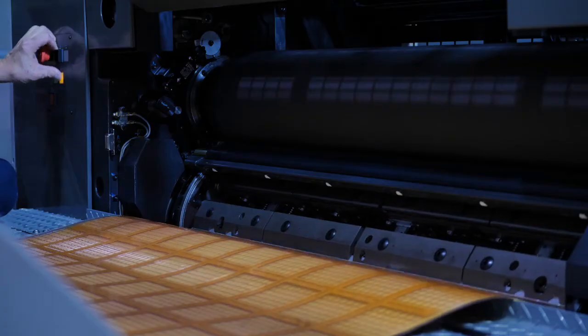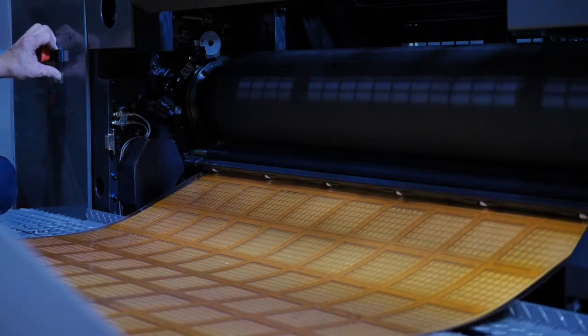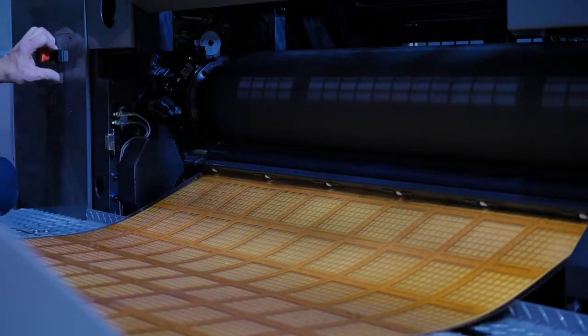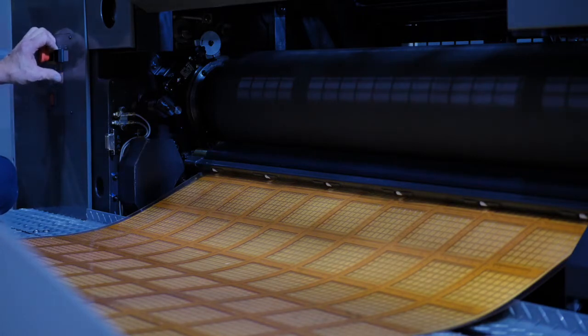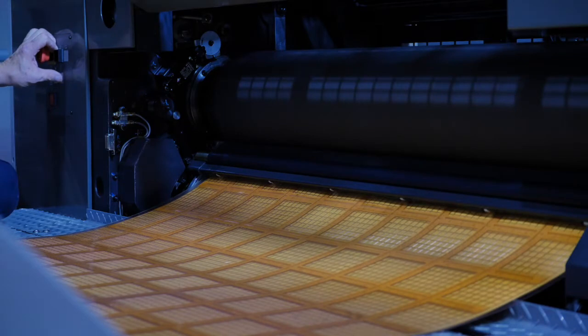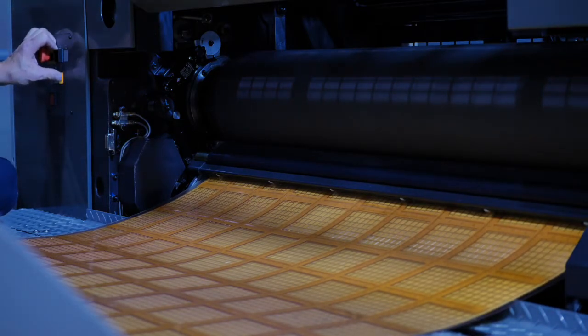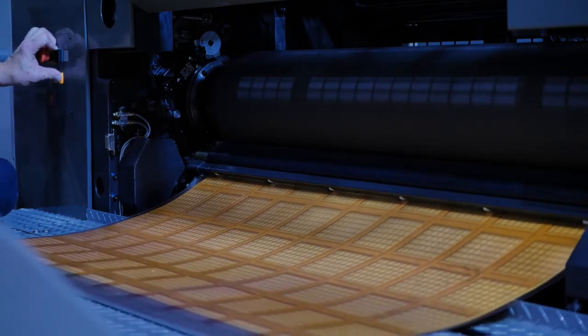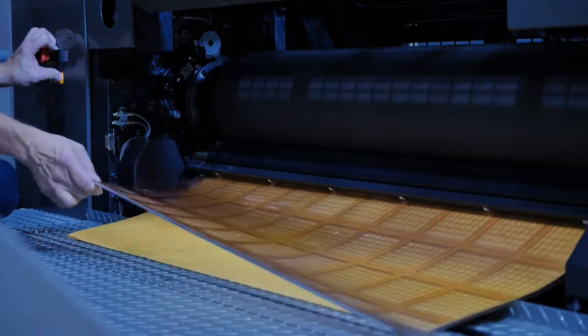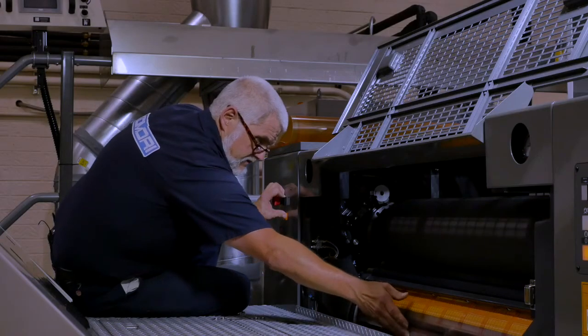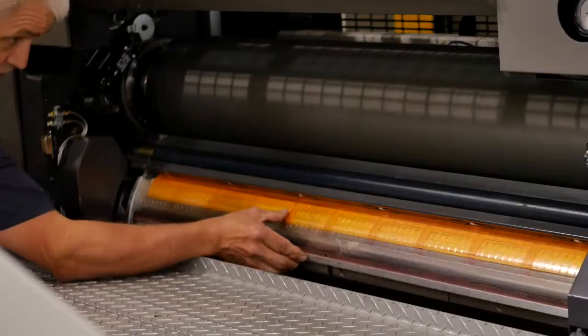And now the clamp is locked up. I just let the press roll the new blanket in. And again, the pressure roller comes into play here. It's going to engage and hold that blanket against the cylinder so it goes in nice and straight and smooth. And once the press is in the right position, I just tuck the tail edge of the blanket into the clamp. And the clamp locks up and I'm done.